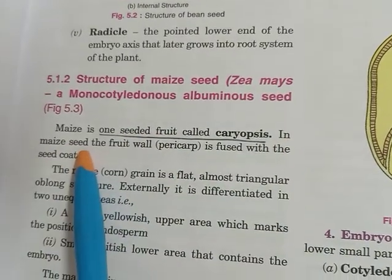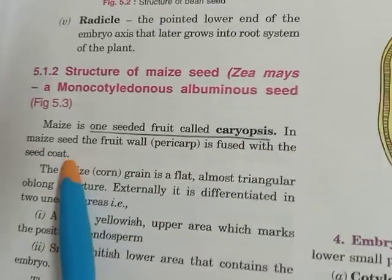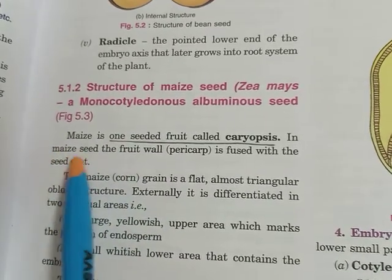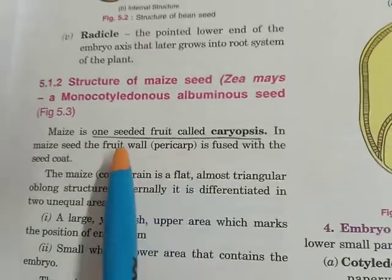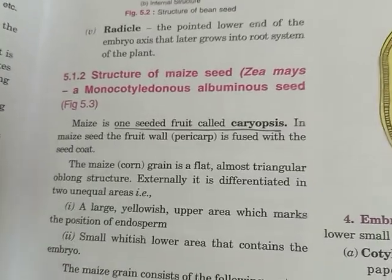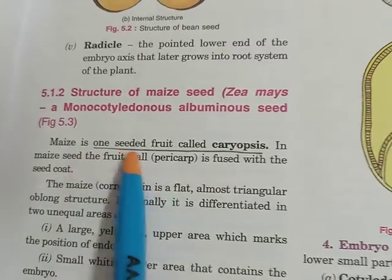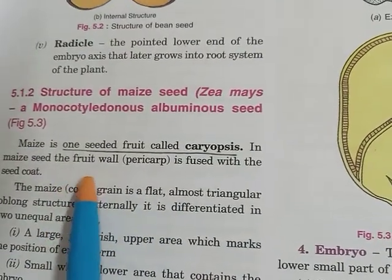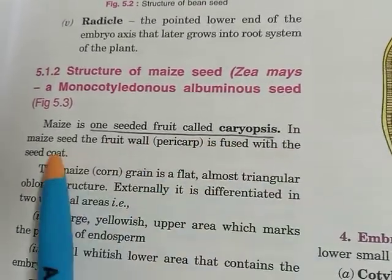In the maize seed, the fruit wall — that is the pericarp — is fused with the seed coat. It is very difficult to separate both of them. Because of this fusion of the fruit wall and seed coat, maize fruit is known as a grain. Maize is called a grain because the pericarp is fused with the seed coat.